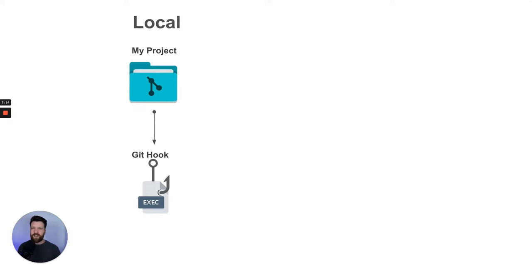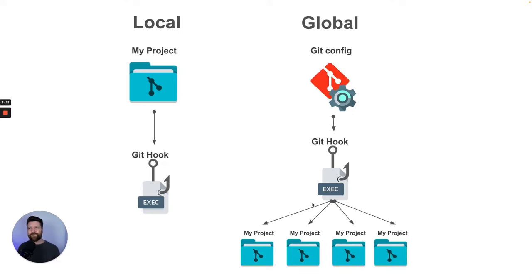Probably pretty self-explanatory. A local hook sits inside your repository — I'll show you exactly where it is in a minute — and this runs just on this repository, just this project, nothing else is concerned. You can set up a global hook, and this means that it's going to run on all of your repositories. So just keep that in mind. There are lots of different ways to be able to do this, and I'm going to run you through the one that I prefer.